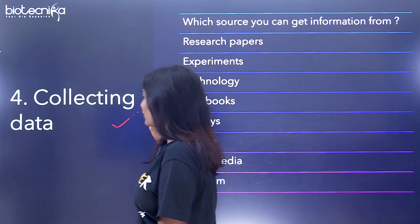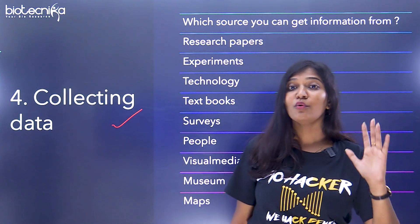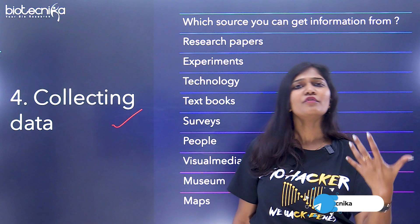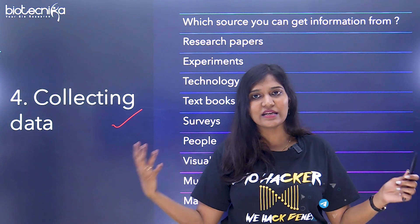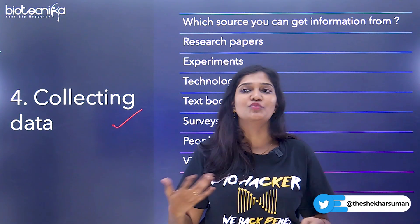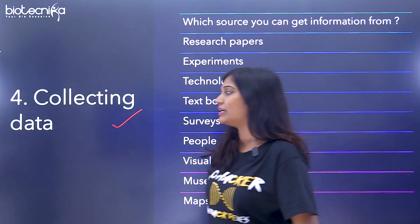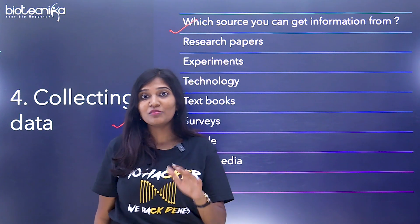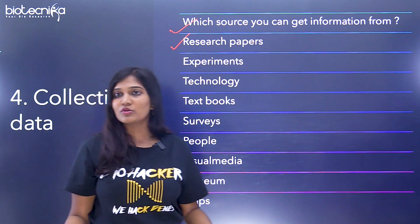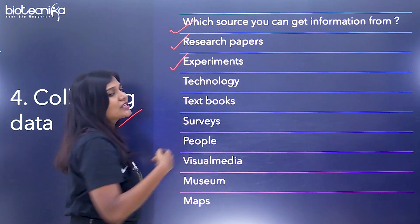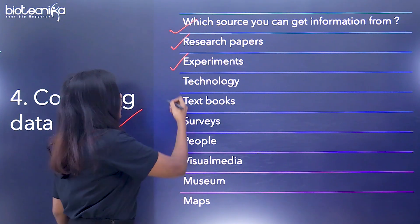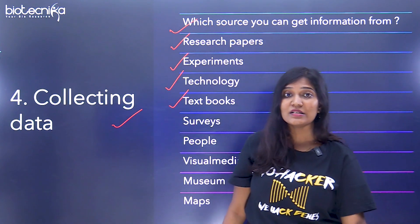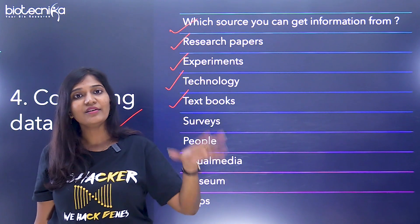The fourth checklist item is collecting data. Now you have a question, observations, and a plan — you have to start collecting data. It's not necessary to start with only theoretical research; you can begin with a survey or go for laboratory techniques. Usually we start with a review of literature. In terms of sources, you can collect data from research papers, your own experiments, or available technologies.